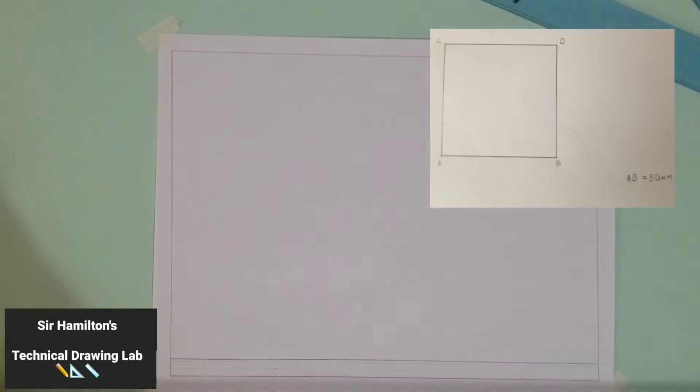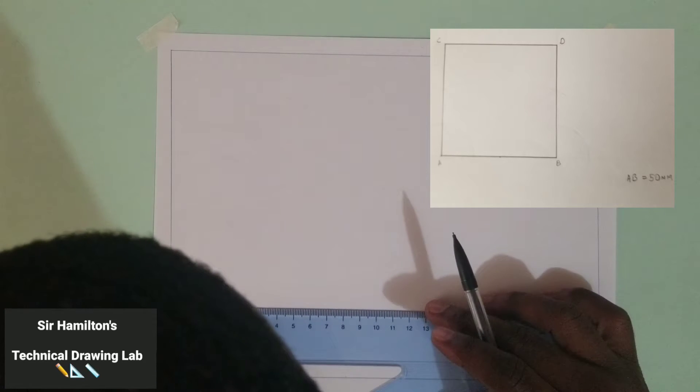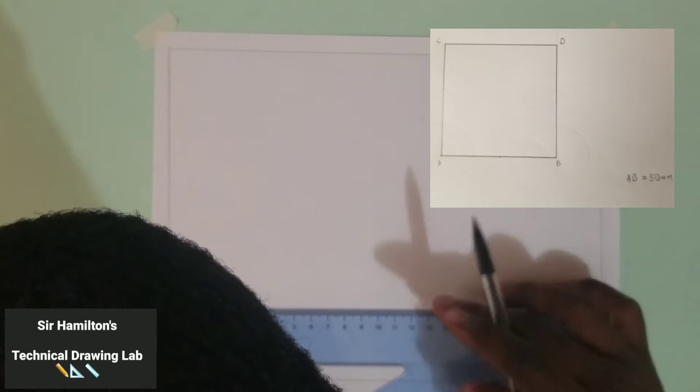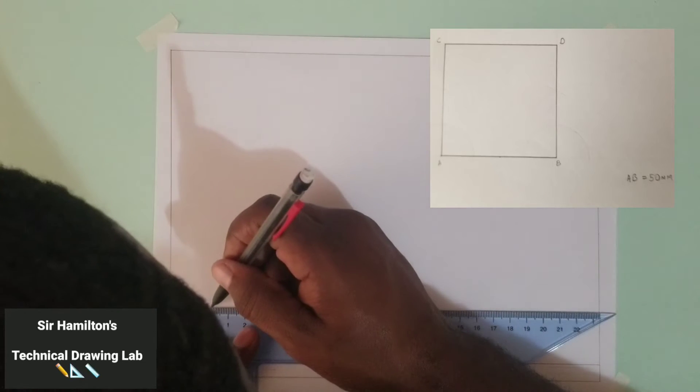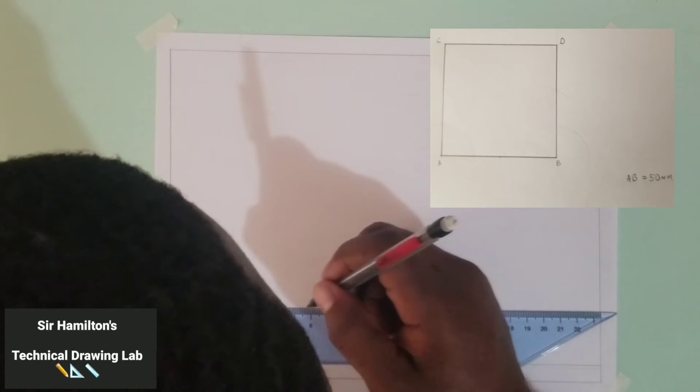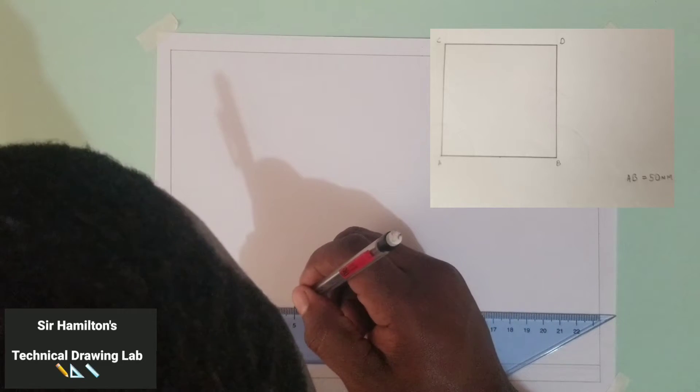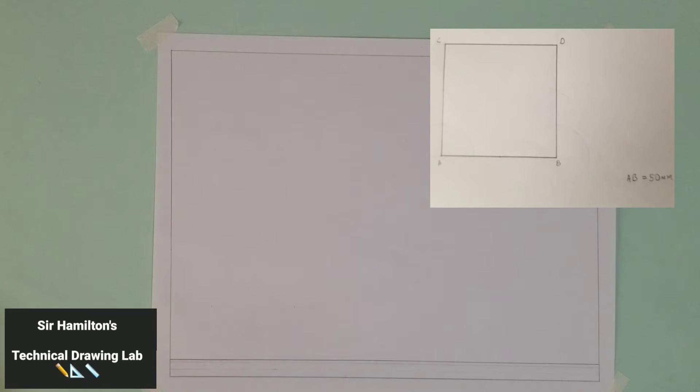I'm going to now take my set square on the mark. 50 millimeters. Right, so those two points there are giving me 50 millimeters.